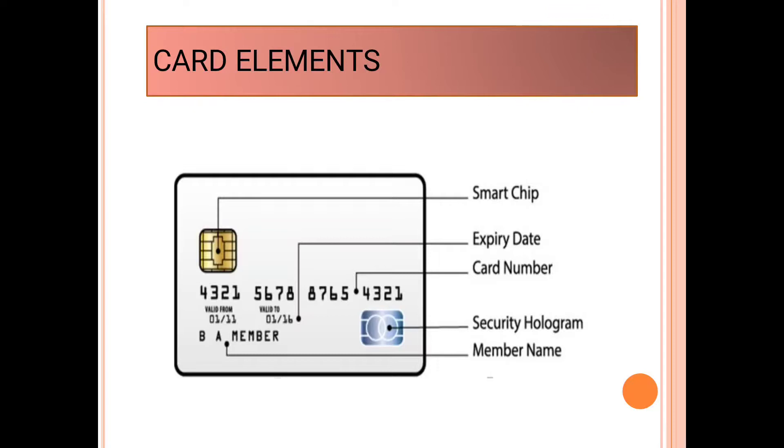The elements of card are given below in the picture. First in golden color is a smart chip. The numbers written in the card are the card numbers. Below the card number, the expiry date is written. A blue shiny sticker is a security hologram. At last, under the expiry date, member name is written.